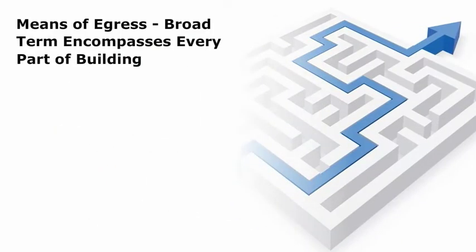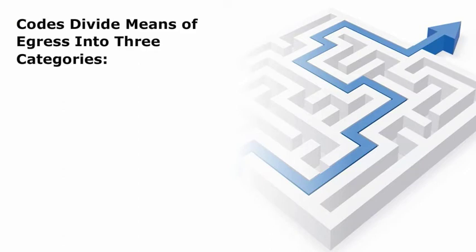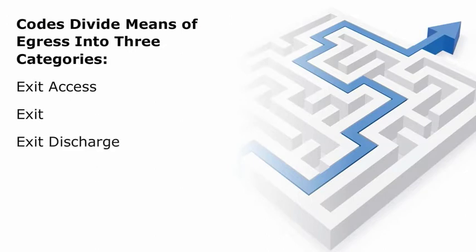Means of egress is a broad term that encompasses almost every part of a building interior as well as some exterior elements. Each of the codes divides a means of egress into three main categories: exit access, exit, and exit discharge. In all cases, a public way is the final destination of a means of egress. In some cases, an area of refuge will also be a part of the means of egress. Now let's define the different components of a means of egress.